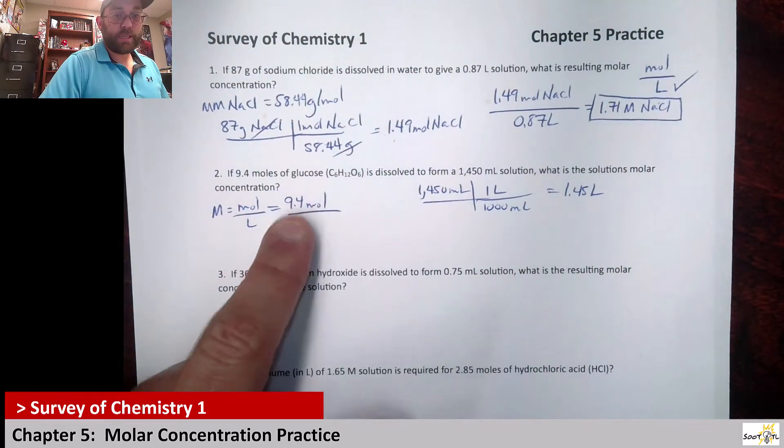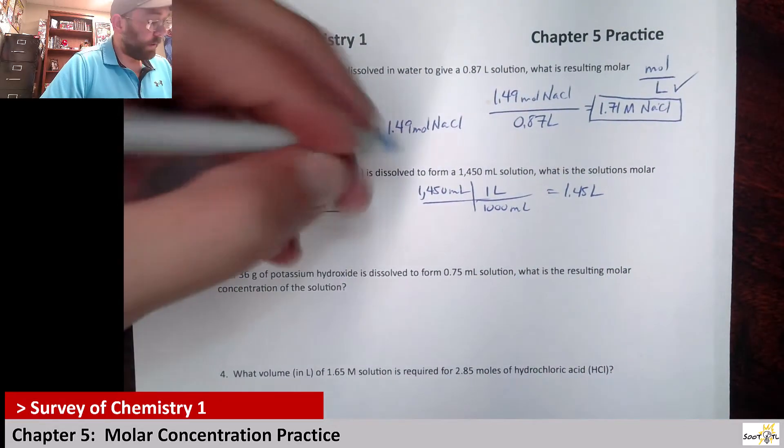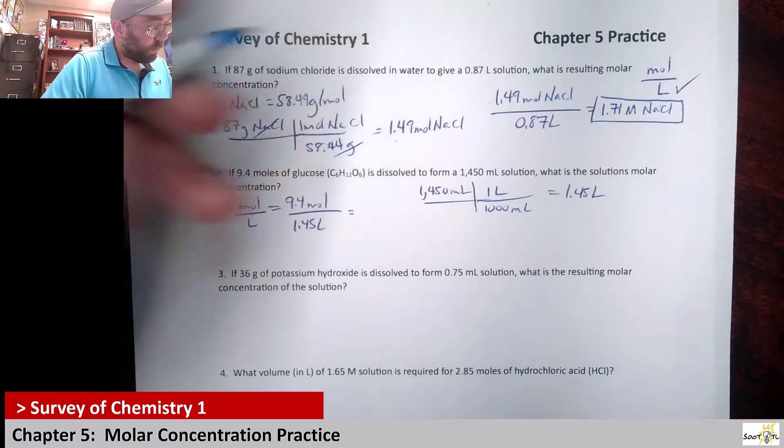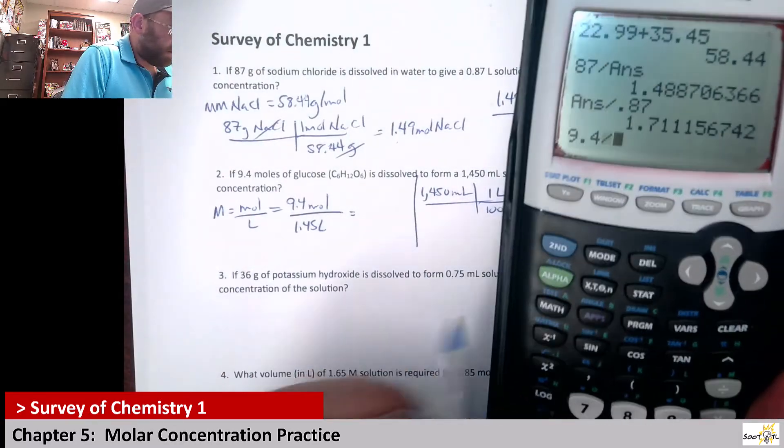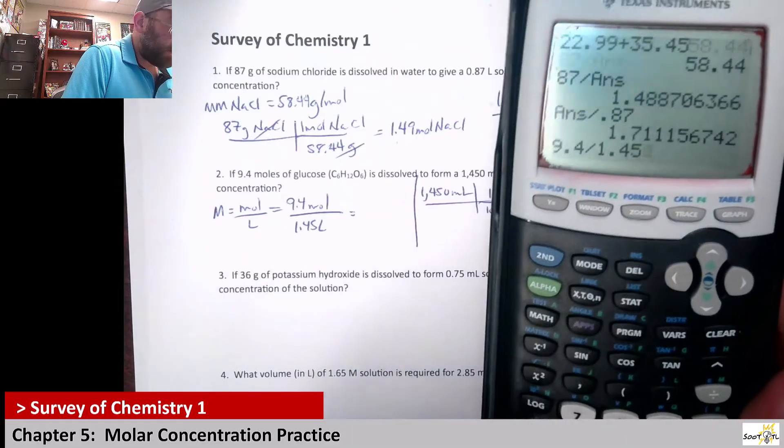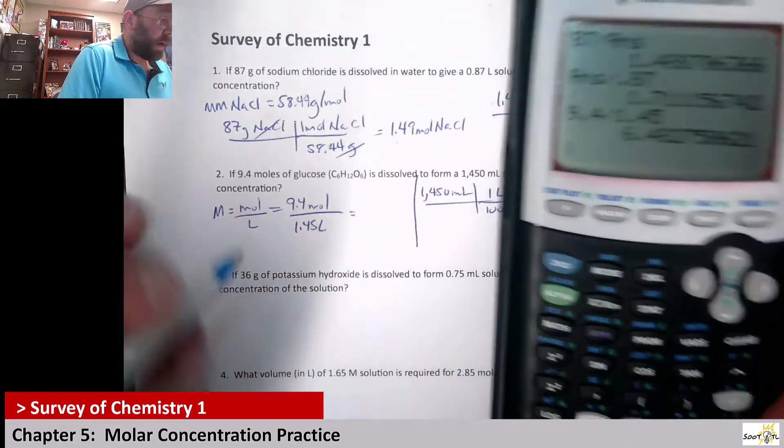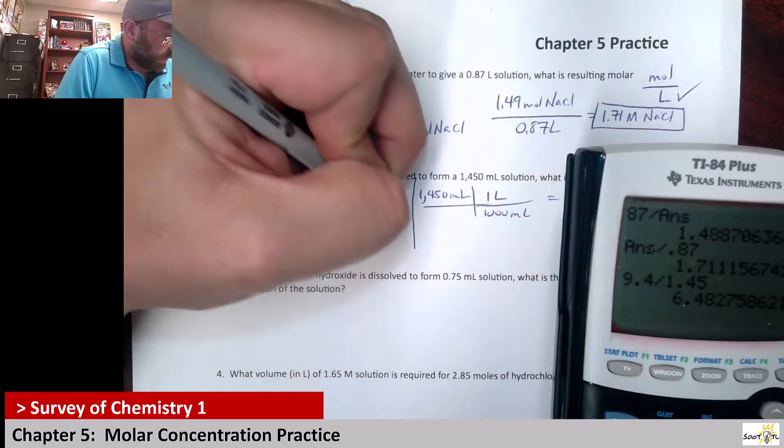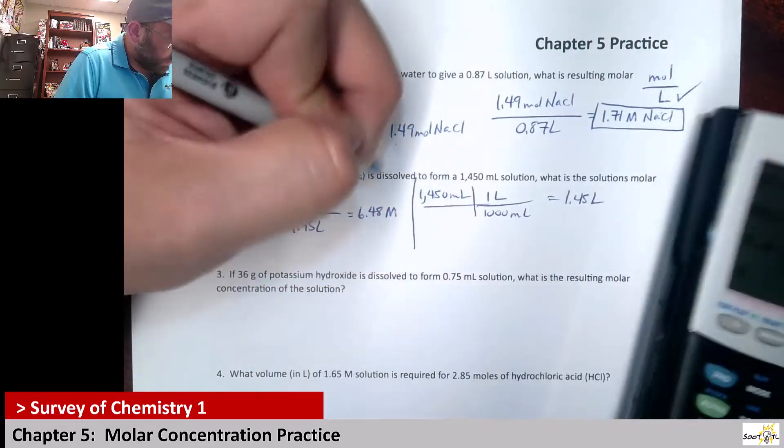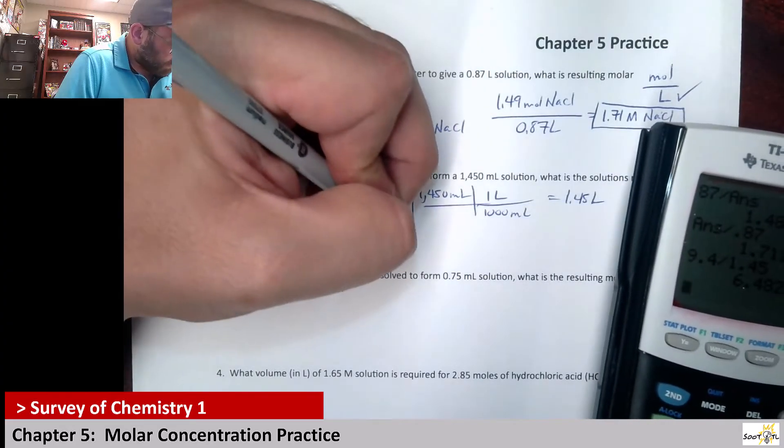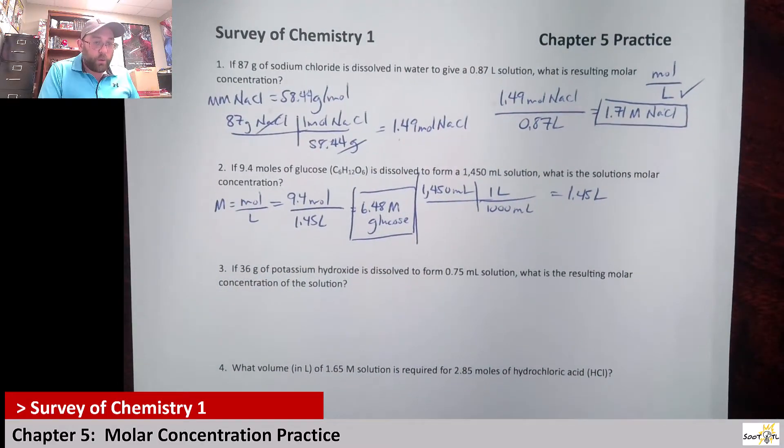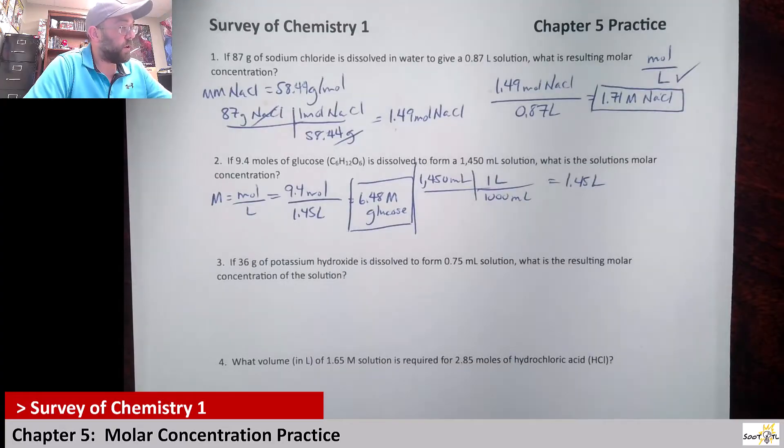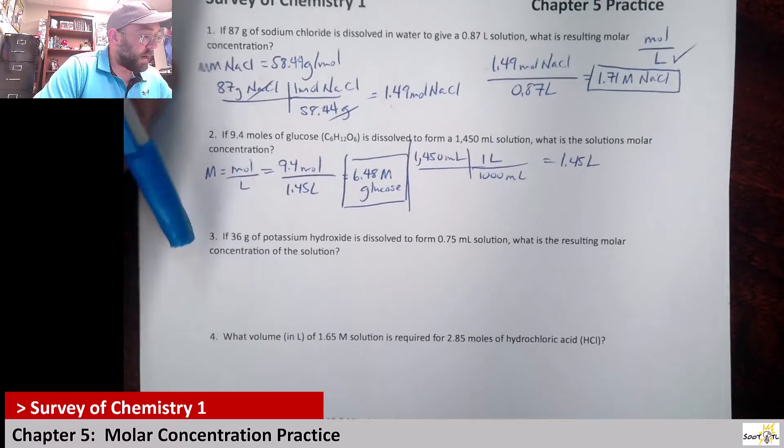I'm going to take that 9.4 moles and divide it by the 1.45 liters. 9.4 divided by 1.45, that gives me 6.48. 6.48 molar of glucose. So that's our molar concentration. That one was a little bit faster because we didn't have to do molar mass stuff.